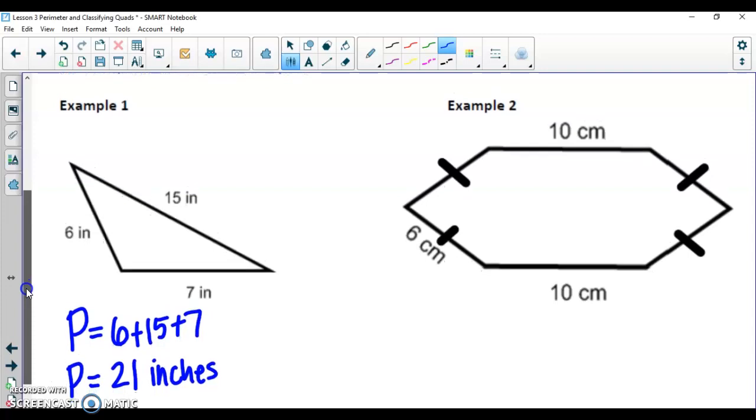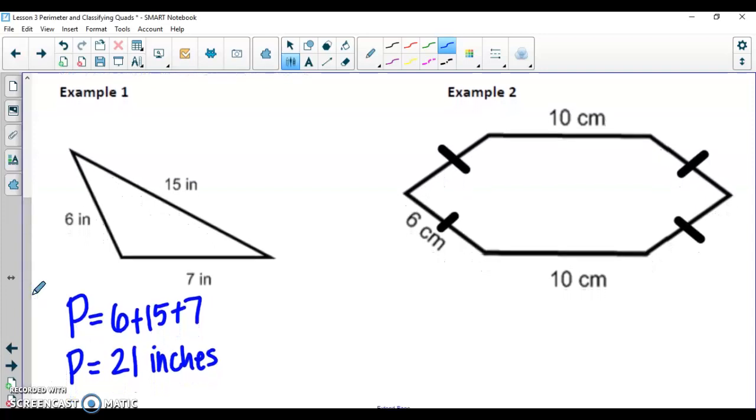In example number two, you can see that we actually have a hexagon here with six sides. Four of the sides are going to be the same because they all have a single tick mark on them. Notice this one with the single tick mark is labeled 6. That tells you that these other sides are also going to be labeled 6. So when we find the perimeter, we can kind of take a little bit of a shortcut here.